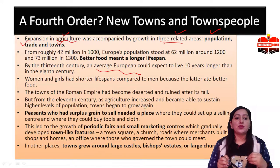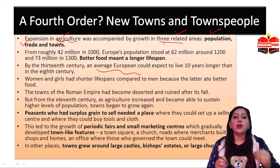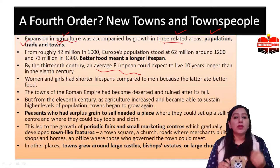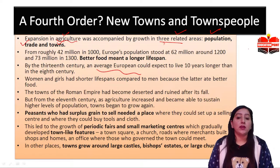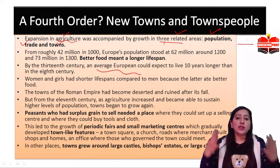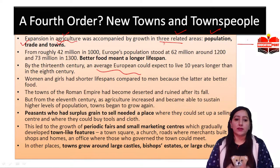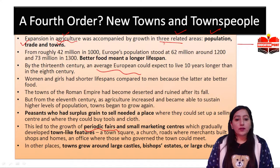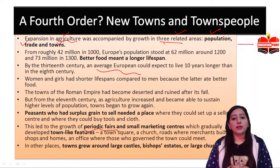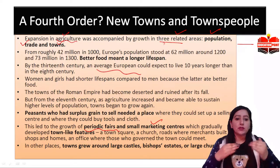Because peasants had surplus grain, they could set up selling centers where they could sell the surplus food. This led to the growth of periodic fairs, which started slowly and slowly, where people would come and buy goods — not only grains but other things too. Small marketing centers started to develop, and we begin to see town-like features.